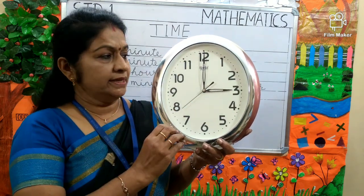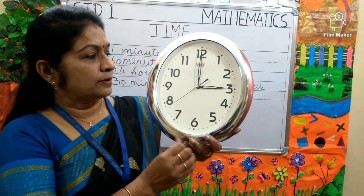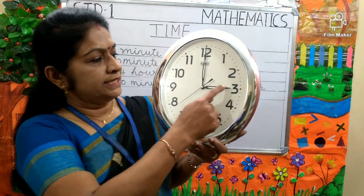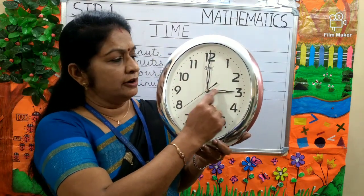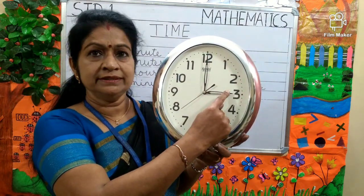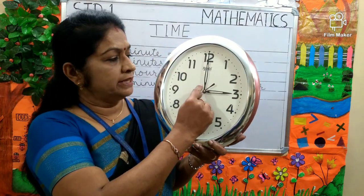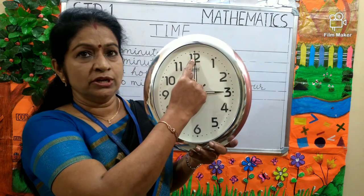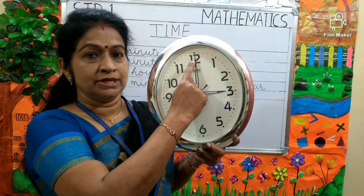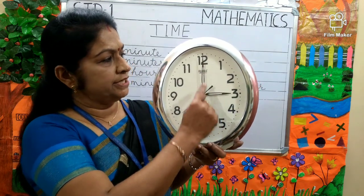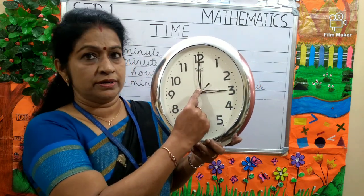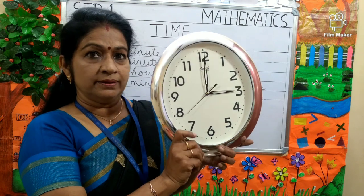Now, say the time here. The hour hand is on 3 and the minute hand is on 12. So the time is 3 o'clock.